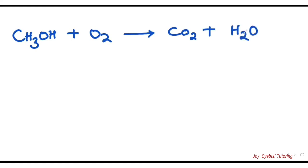Looking at this reaction, it's not balanced. Let's start with carbon — carbon here is one and one here, so carbon is balanced. Hydrogen here is three plus this one, so four, and here we have two. So we start with balancing the hydrogen — add two here, that will make four, which balances the hydrogen.